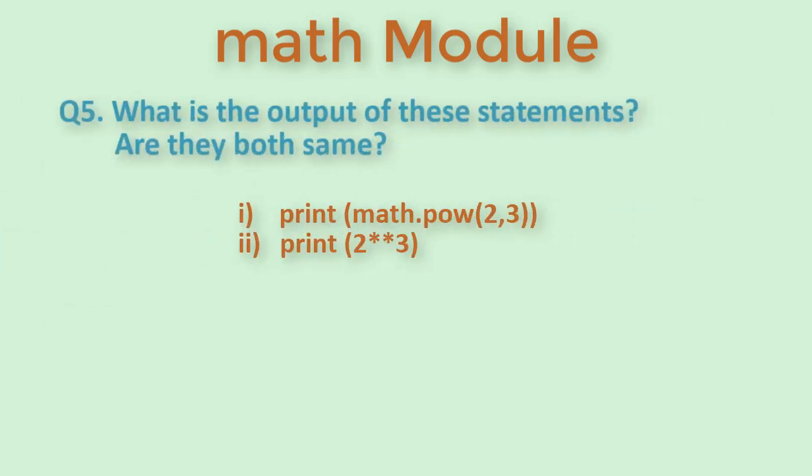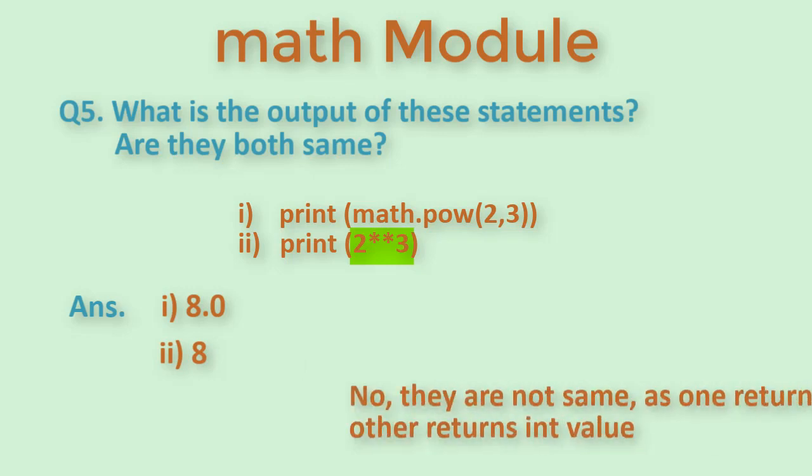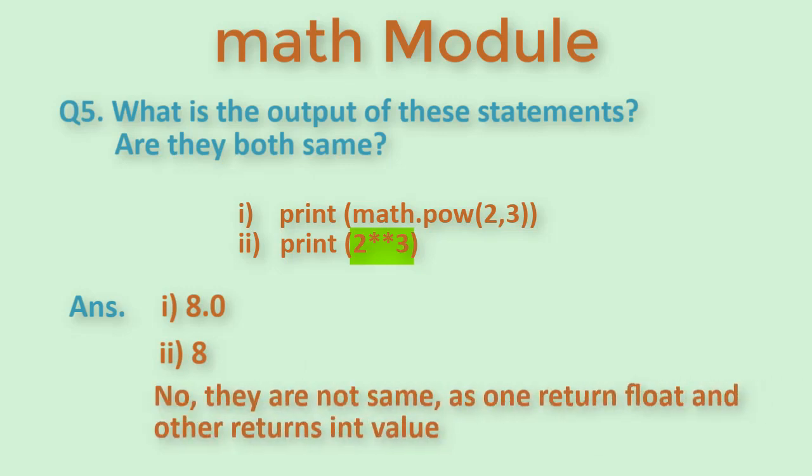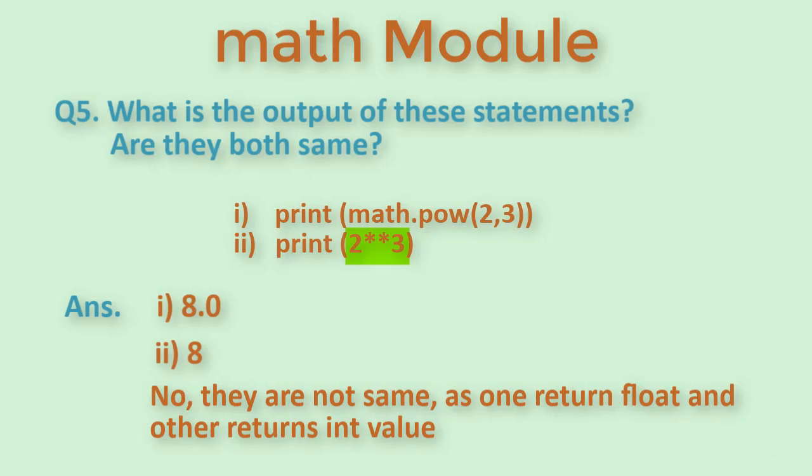Another question on this is what is the output of these statements? Are they both same? Here math.pow always gives a float output so it will give the answer as 8.0. Exponential operator on the other hand will give integer value if input is given as integer and will give float value if the passed values are float. So in this case it will print 8.